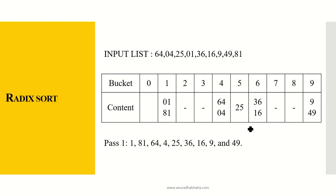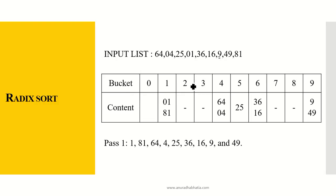Now let's consider how the radix sort actually works for a two-digit number. Let's take the input series as 64, 04, 25, 01, 36, 16, 9, 49, and 81. You will see these are two-digit numbers. Wherever there is a single digit, you can add a 0 to the left-hand side. Now these are the buckets — buckets are from 0 to 9, and the content will be put over here.